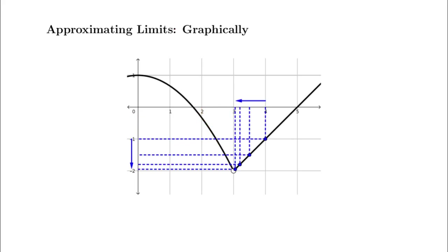Similarly, we can do the same thing on the right — we use blue for the right-sided limit. We start with an x value of 4, kind of close to 3 but bigger than 3. Then we find values closer to 3 but still bigger than 3, moving towards 3 from the right. We follow what the y values do: they start and then decrease again. If I'm a betting person, the right-sided limit here is also negative 2.